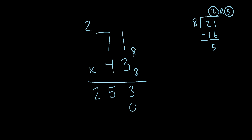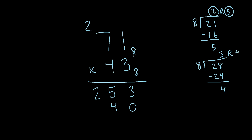Next we put in a placeholder zero and do the same thing with the 4. Four times 1 is just 4. Four times 7 is 28. Since 28 is eight or higher, we ask: how many eights go into 28? That would be 3. Eight times 3 is 24, so 28 minus 24 is 4. Our remainder is 4, which we write here, and the whole number — 3 — gets added to the next column. We cross out the 2 and bring the 3 down.